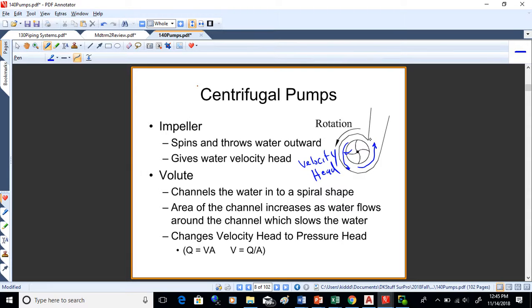When that impeller throws the water out, the water has what's called velocity head. But as it comes around, that channel starts to get bigger, so using v equals Q over A, the water slows down. That velocity head changes into what you want, which is pressure head. The volutes are intentionally in a spiral shape to increase the area and slow the water down, so velocity head changes into pressure head. The impeller spins and gives the water velocity head.